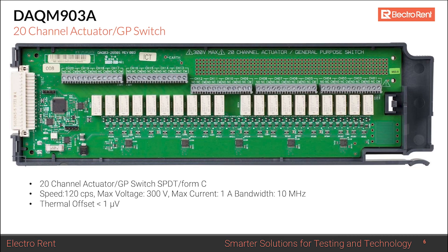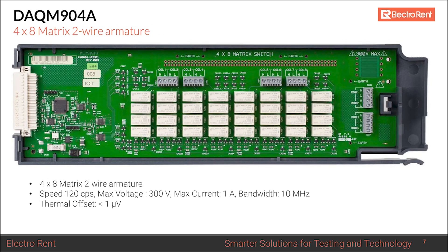The DAQM903A has a low thermal offset but no reference junction, so it cannot be used for thermocouples — it's strictly a general-purpose switch card. The DAQM904A is a 4-by-8 matrix with hard relays, useful for signal routing. You could route four power supply voltages to eight board points, or connect four instruments to eight different signals. It supports 300 volts and 1 amp with a low thermal offset, but again has no reference junction for thermocouples.